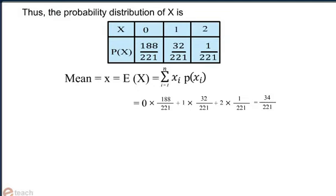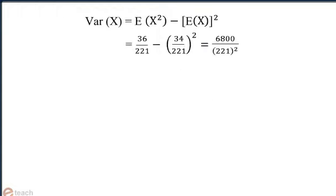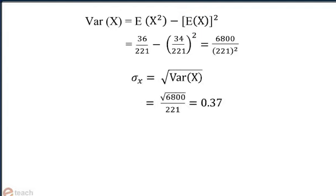Mean of x, that is E(x), equals summation i equal to 1 to n of xi times p(xi), and it comes out to be equal to 34 by 221. Then E(x squared) comes out to be 36 by 221. Using the formula, variance of x equals 6800 divided by 221 squared, and the standard deviation of x, which equals the square root of variance of x, comes out to be equal to approximately 0.37.